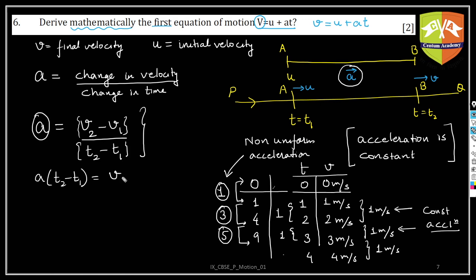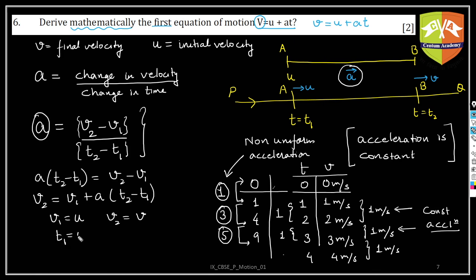From here it is simply mathematical. a times (t2 minus t1) equals v2 minus v1, so v2 equals v1 plus a times (t2 minus t1). Here v1 is initial velocity u, v2 is final velocity v, t1 equals zero, and t2 equals t. Substituting all values: v equals u plus at. This is the mathematical derivation of the first equation of motion, derived directly from the definition of acceleration. I hope you understood.